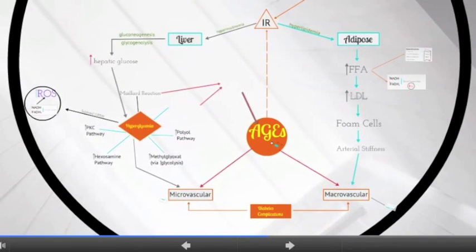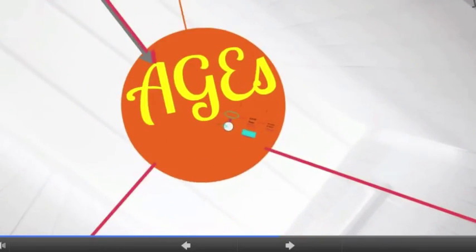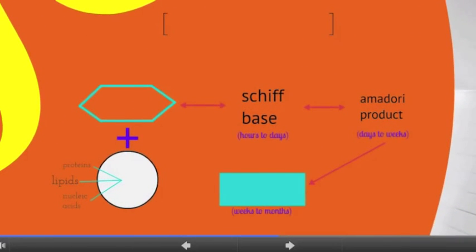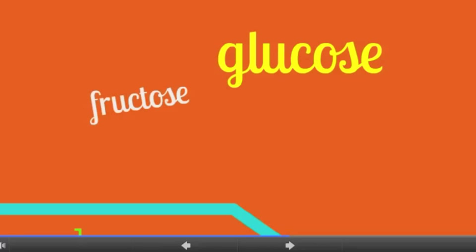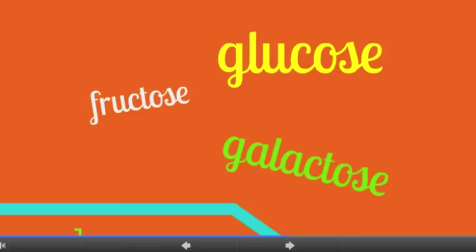The increased oxidation of glucose and lipids also increases the formation of advanced glycation end products through a variety of mechanisms. First, AGEs, or glycotoxins, are modifications of proteins and lipids that become glycated and oxidized through a non-enzymatic reaction with reducing sugars. Reducing sugars are monosaccharides such as glucose, fructose, and galactose, whose functional carbonyl group is either an aldehyde or ketone.